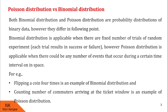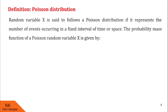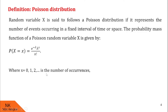Therefore, this example is an example of Poisson distribution. Now let us see the formal definition of Poisson distribution. A random variable x is said to follow Poisson distribution if it represents the number of events occurring in a fixed interval of time or space. The probability mass function of Poisson random variable x is given by P(X = x) = e raised to minus lambda, multiplied by lambda raised to x, upon x factorial, where x takes values 0, 1, 2, and so on. It denotes the number of occurrences of an event.